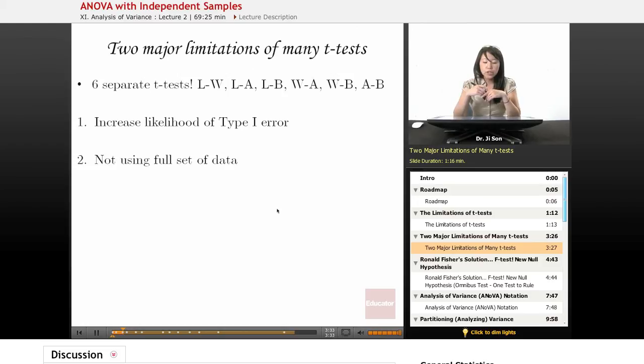So you should know there are two major limitations of having many t-tests. If you have six separate t-tests, one is the increased likelihood of Type I error, and that's bad. We don't want a false alarm.